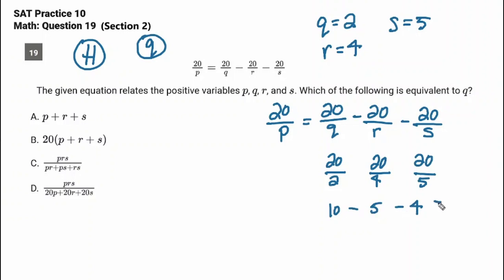20 over 5 is 4. 10 minus 5 minus 4, that's 1. 20 over P is 1, so what's the only thing that P can be? P's got to be 20.